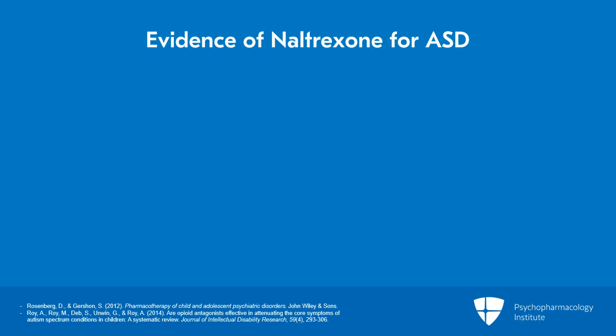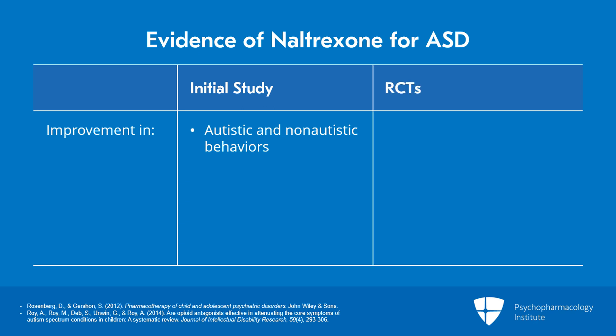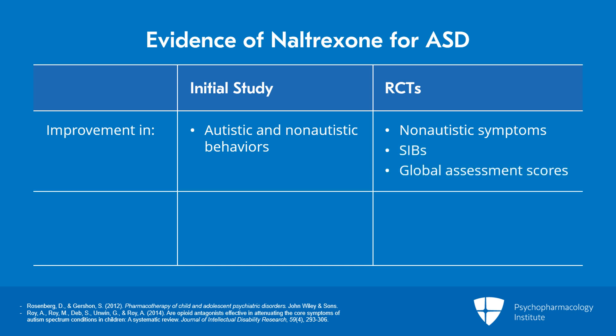An initial study of naltrexone in autistic children found improvements in autistic symptoms — decreased social withdrawal, increased verbal production, reduced stereotypic behaviors — and non-autistic symptoms, that is, decreases in restlessness and tantrum symptoms. Subsequent randomized controlled trials also found that naltrexone produced significant improvement in non-autistic symptoms including impulsivity, hyperactivity, and irritability, and led to decreases in self-injurious behaviors and improved global assessment scores.